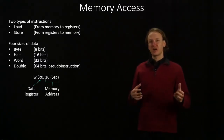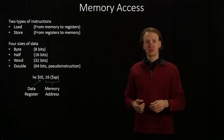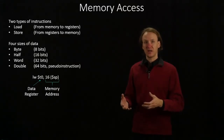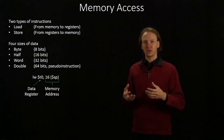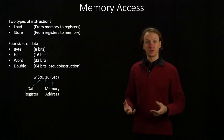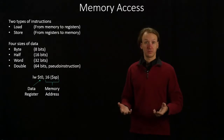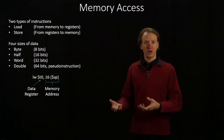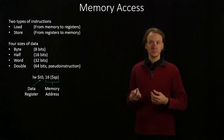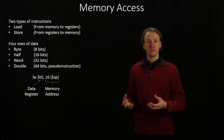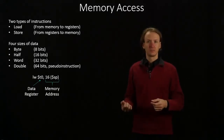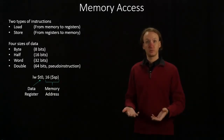We have four different sizes of data that we can work with. We can work with just individual bytes. Because our architecture is byte-addressed, this is the smallest element of data that we could access. These are most likely to be useful if you're working with a character string — each character is going to be one byte long. We also have half words, which are 16 bits long, so you get twice as much data. These would be equivalent to a short in C or C++.